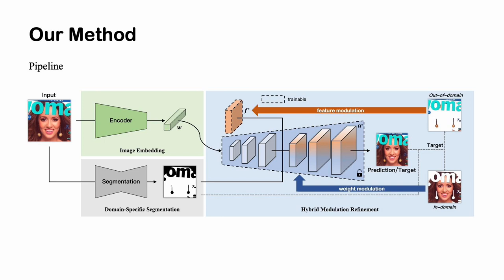In hybrid modulation refinement, weight modulation is applied to refine in-domain areas and restore image details for both inversion and editing results. Conversely, for out-of-domain parts, we use feature modulation to refine them spatially and fix feature distribution during editing.